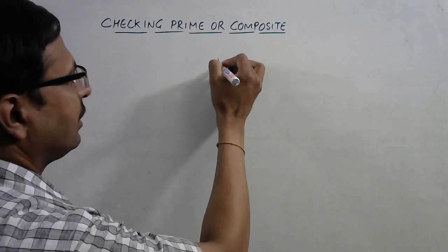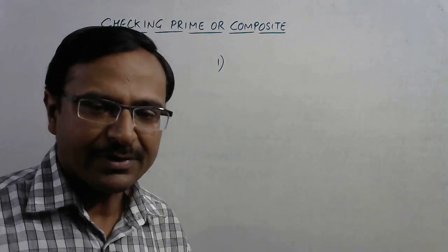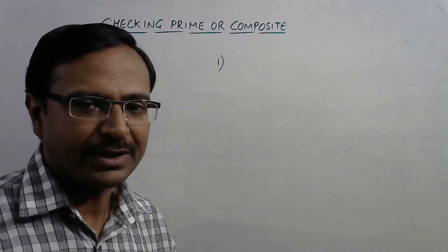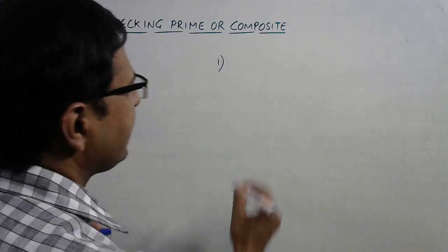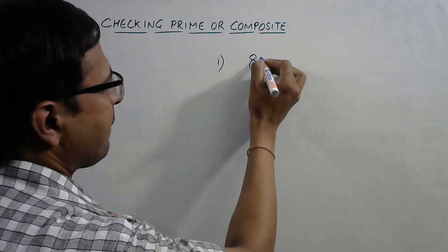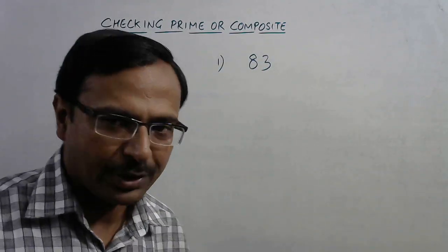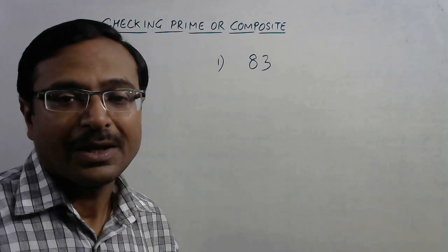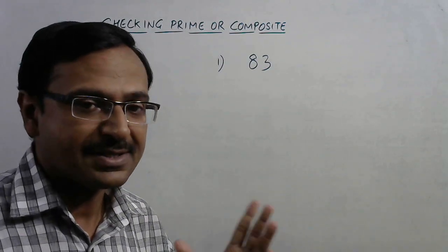Okay, let's see. First of all, I'll take a two-digit number first so that we are well acquainted with the method. After that, we can get on with the larger numbers. Suppose we have 83. Now I want to check whether 83 is prime or not.